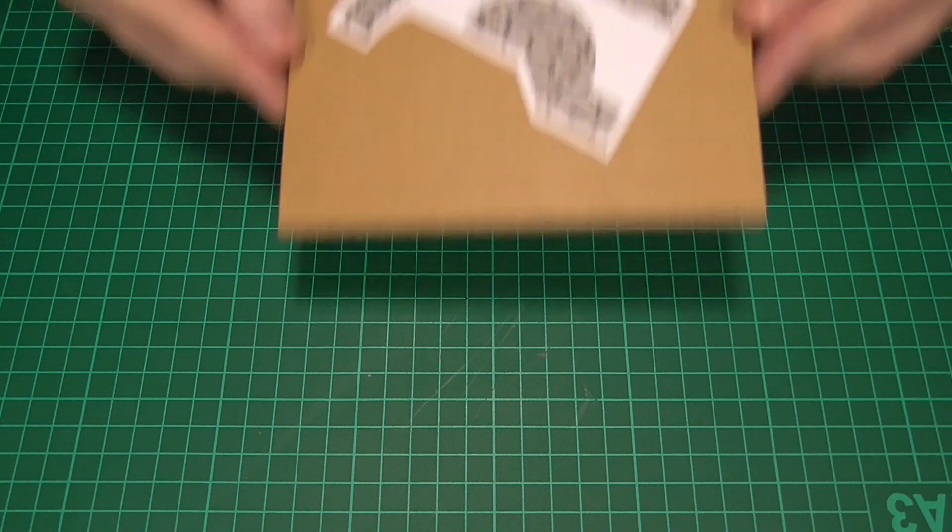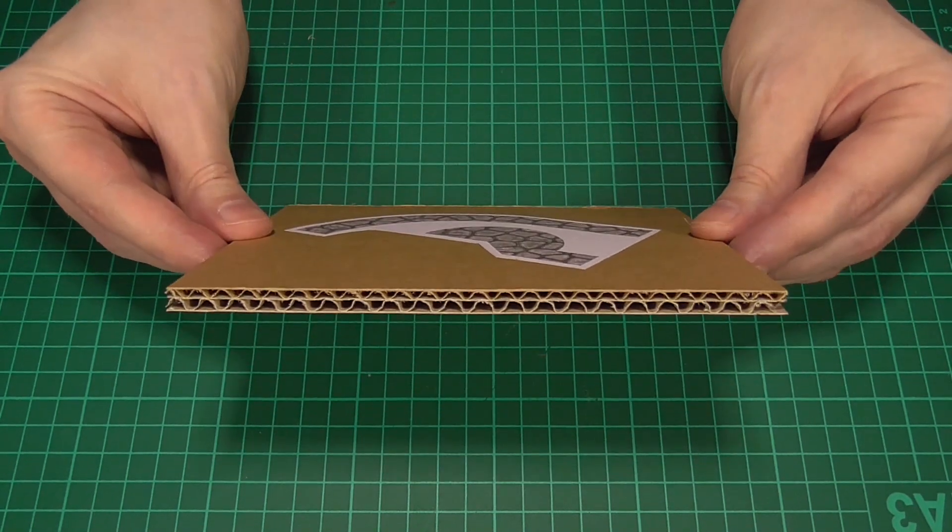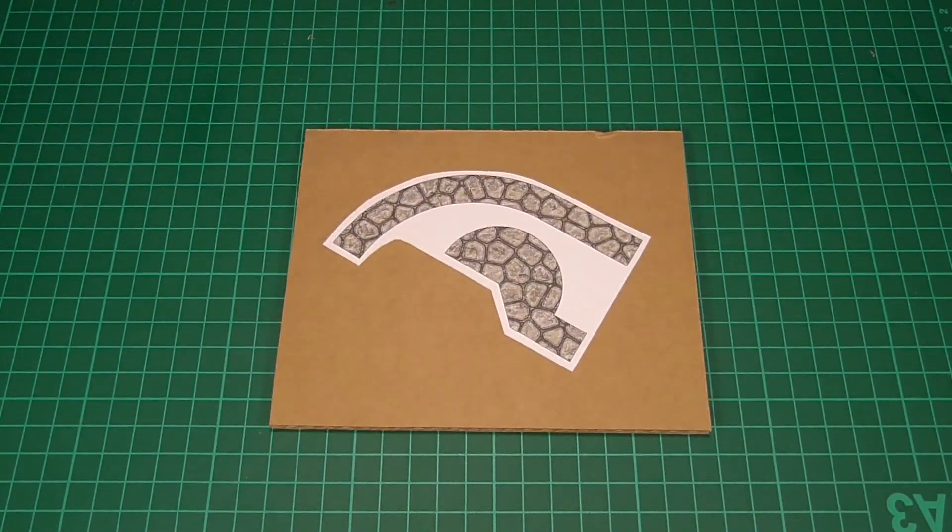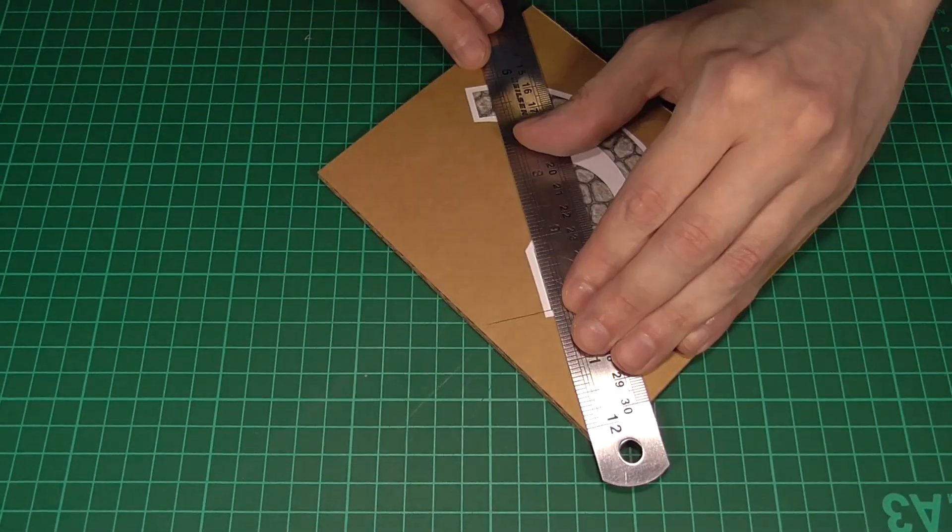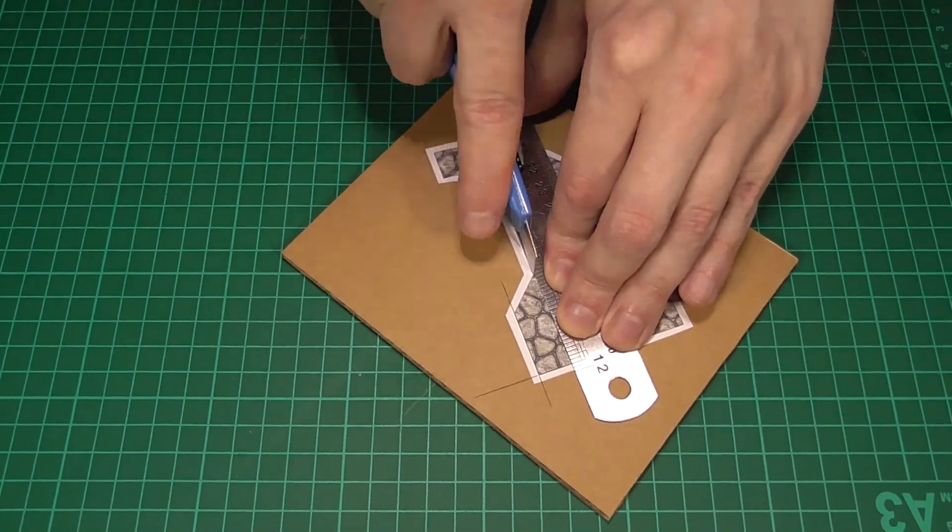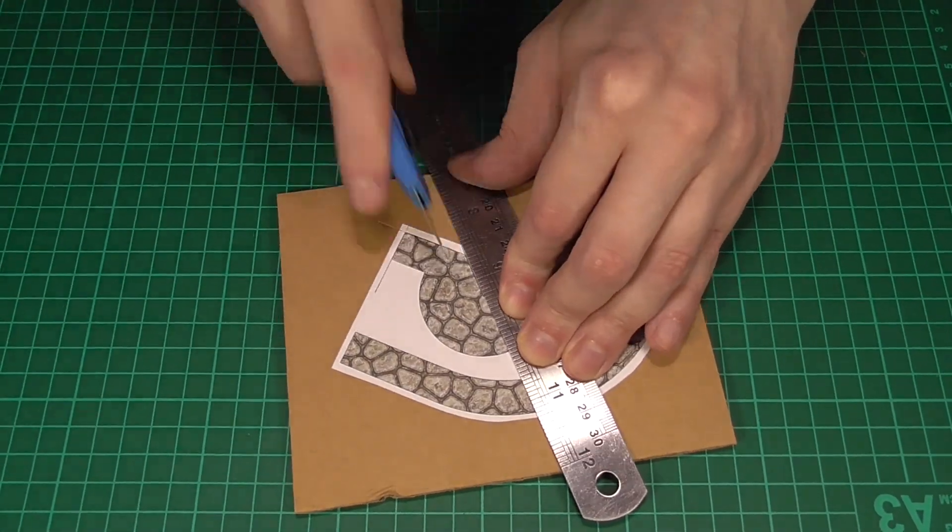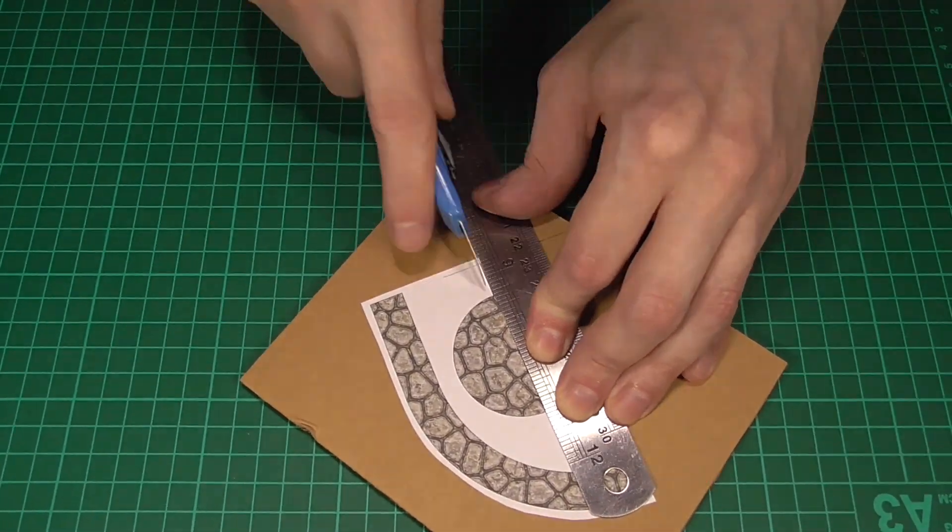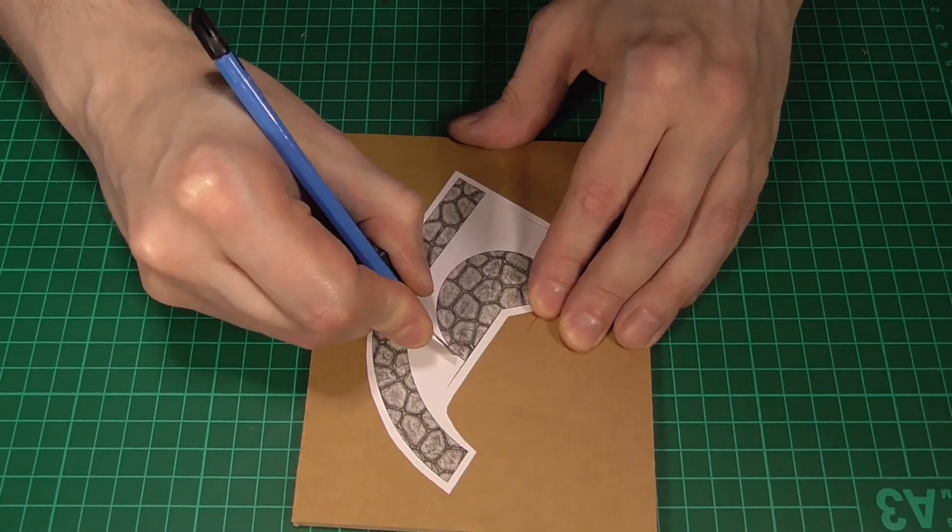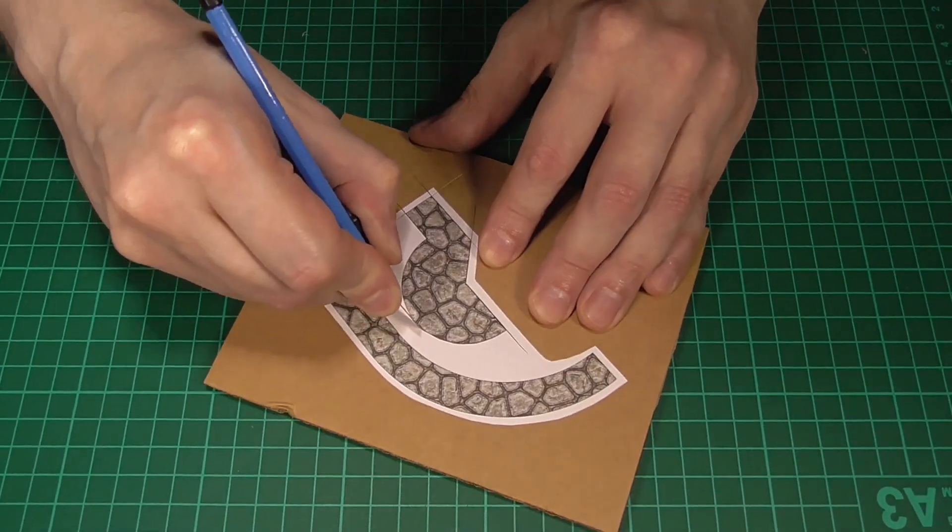Right then, next we're going to take these wall patterns and glue those to some double corrugated card or foam core if you prefer. Then, just like with the steps, we can cut all of the straight edges of the smaller piece to size, as you can see. And then like before, we can use a knife with a brand new blade to start cutting away the curved edge.